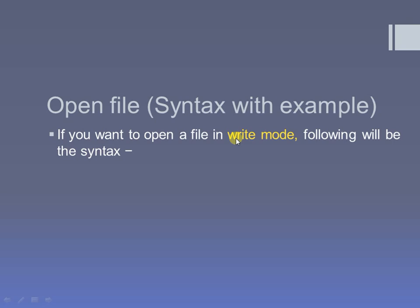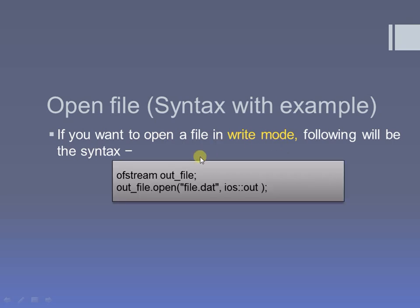Different modes are available as per your requirements, already explained in the file opening modes video. Now here is the syntax for opening a file in write mode. Write is an output function, and since I only want to perform the write operation, I am using the ofstream class. I am making an object — this is the file pointer — of the ofstream class, because I just want to perform the write operation. This file pointer is responsible for accessing the member function open from the ofstream class.